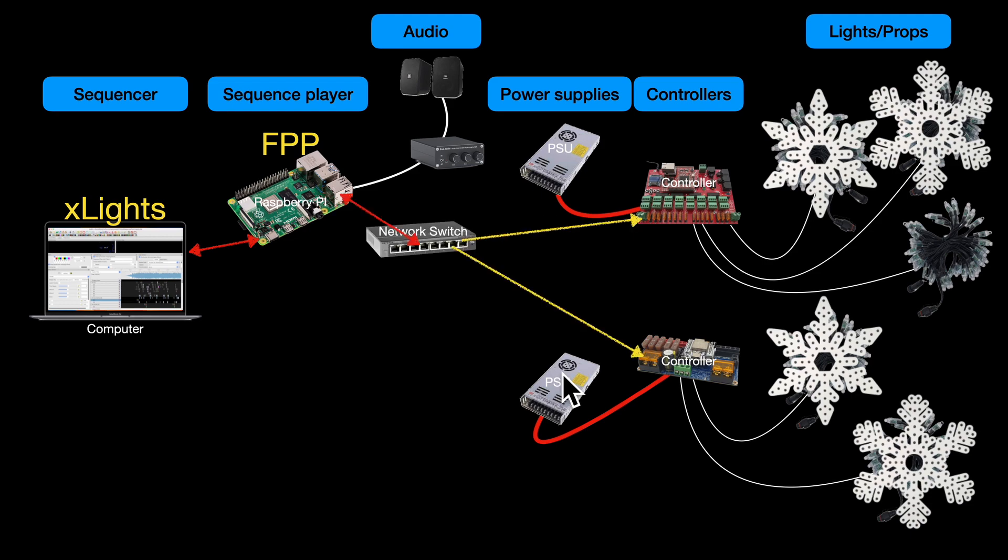Usually you need an extra little component called a network switch, because all this communication between the FPP and the controllers is over ethernet. So you need to extend the network. There are other ways, but the easiest way is just to buy a nice simple network switch that allows you to connect the controllers to the Falcon Pi Player.